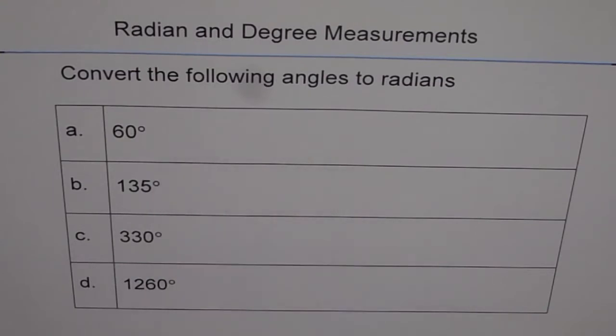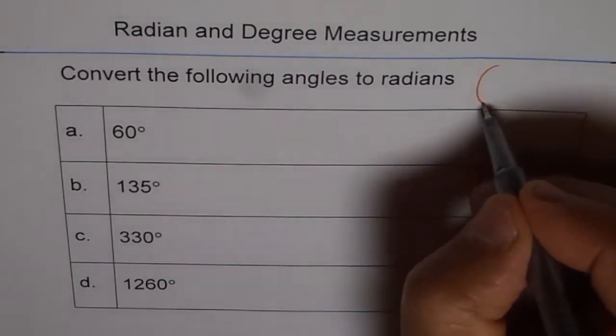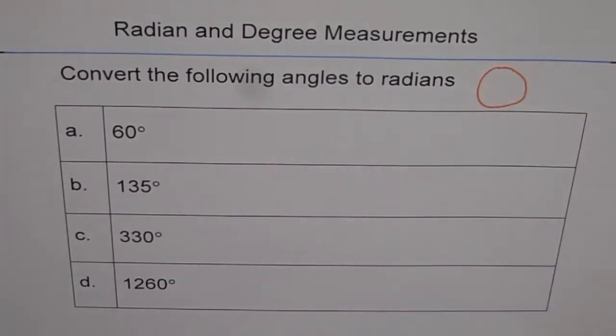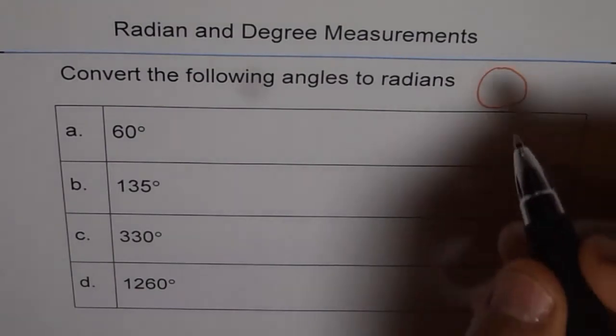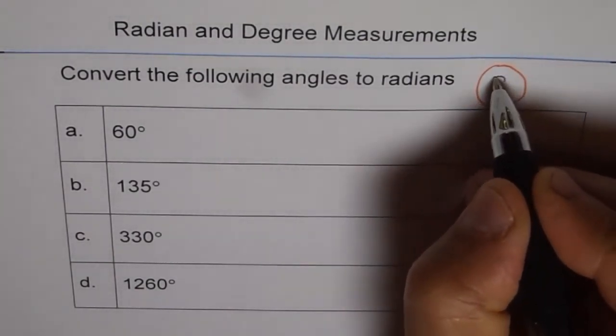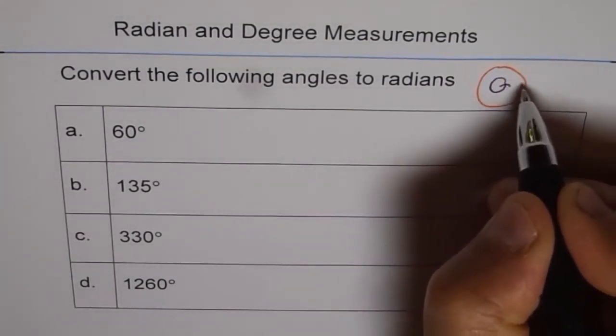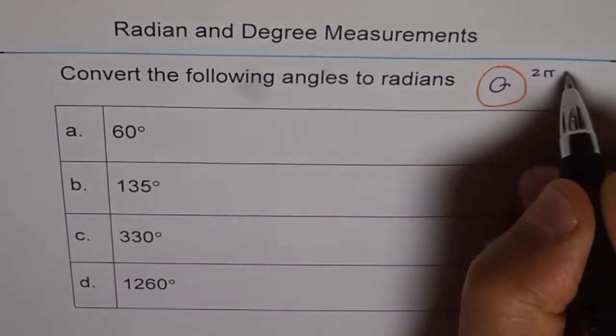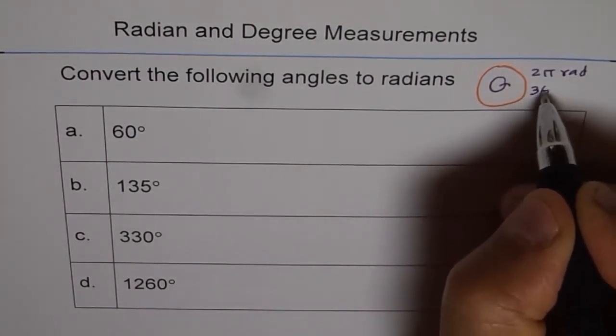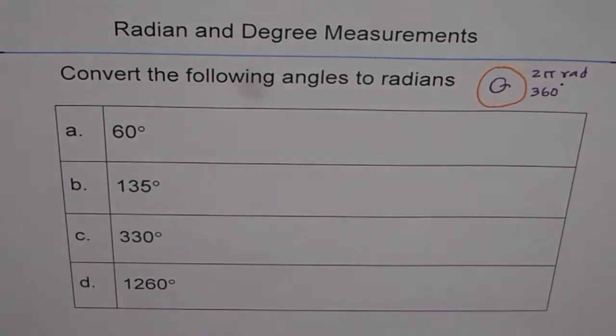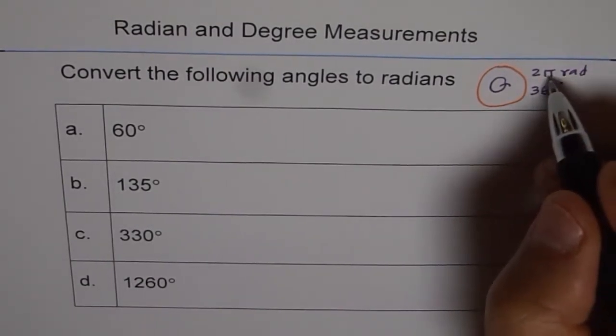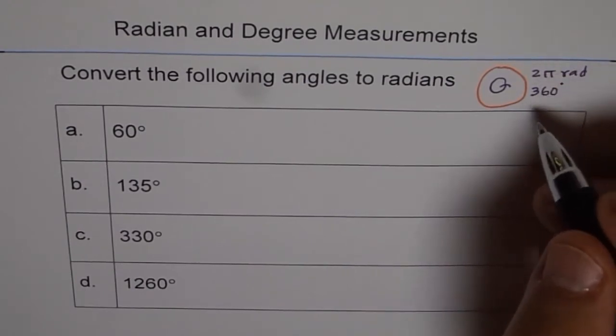Convert the following angles to radians. So what is the conversion factor? Well, you know, one full circle is how many radians and how many degrees. It is 2π radians. If you go one full round, it is 2π radians or 360 degrees. We can also say it is π radians and 180 degrees, half of half.